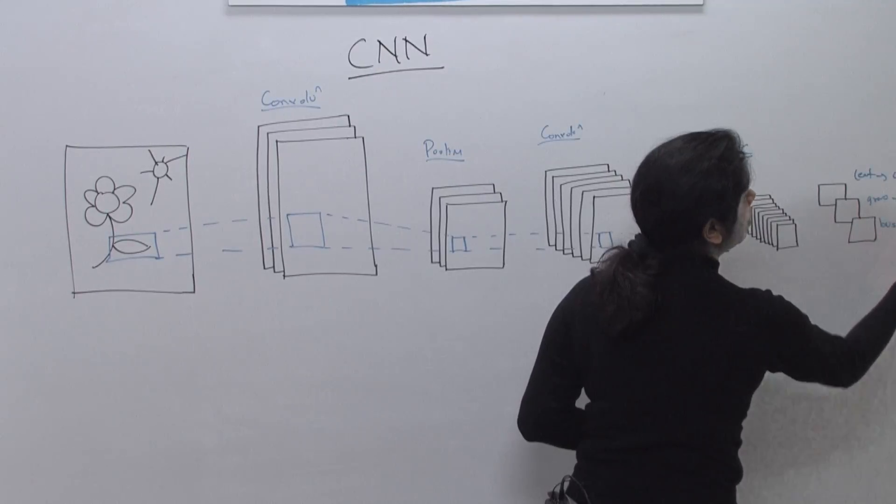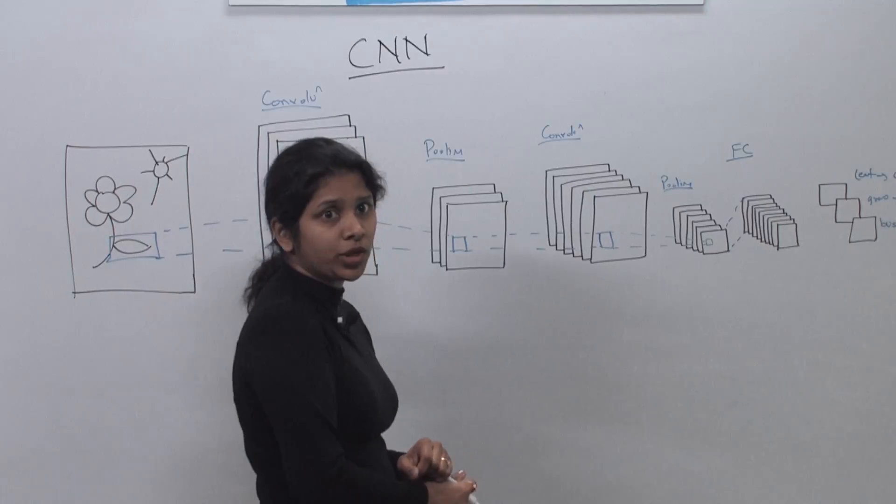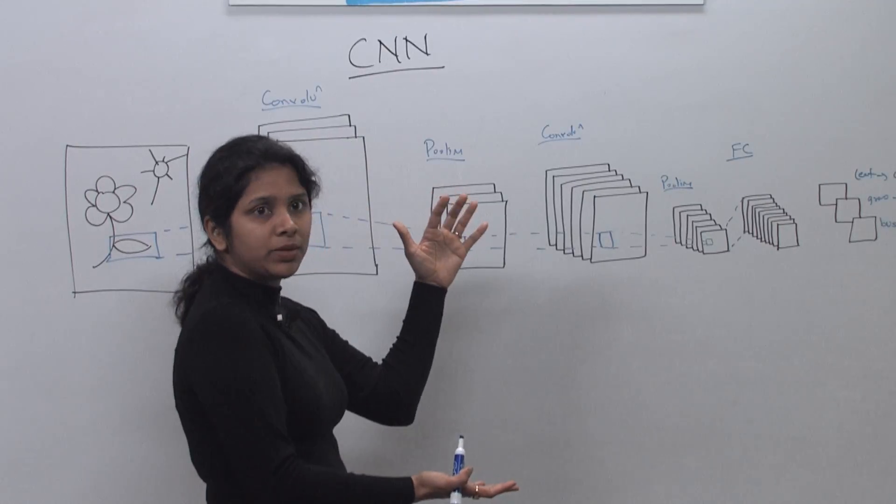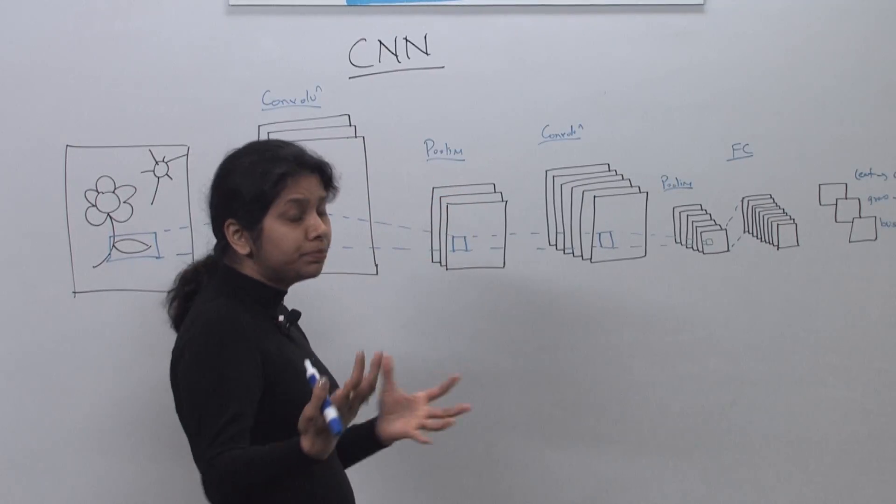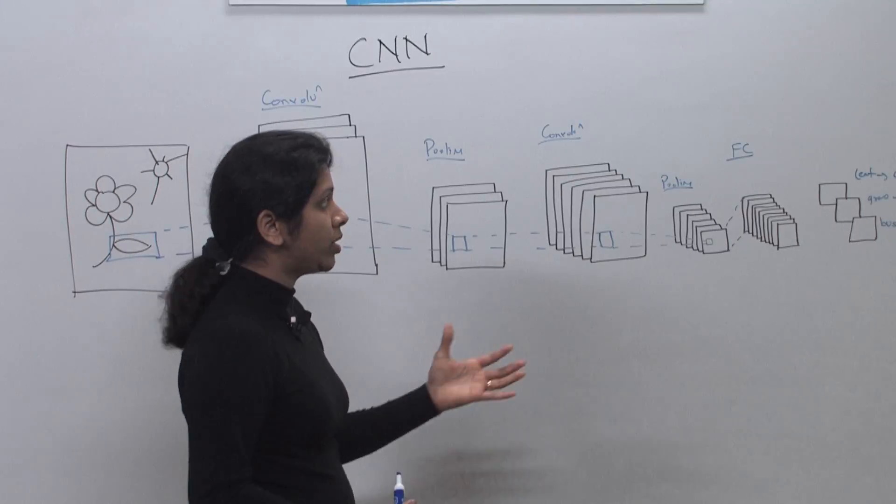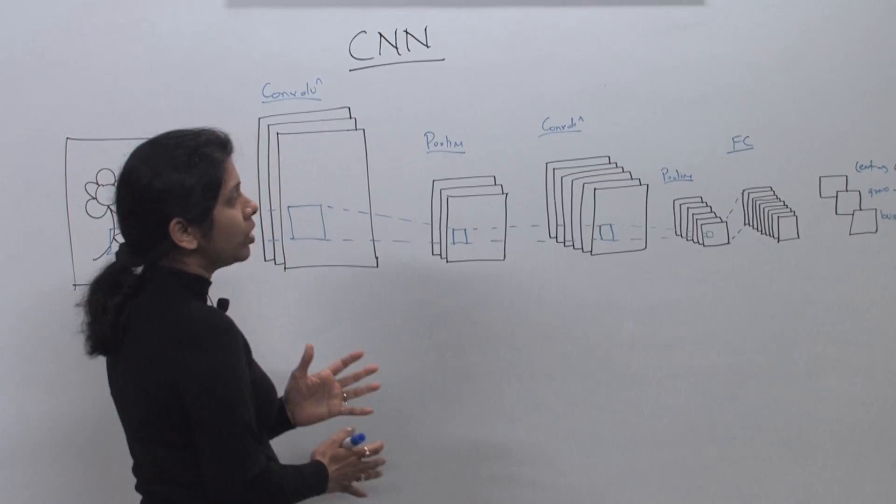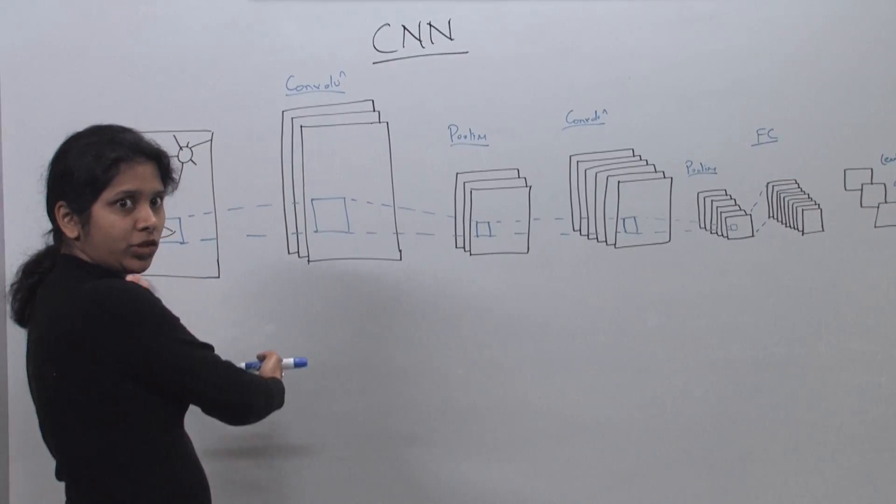And it gave a probability of 1% that it's a bush. So it gave you the top three probabilities, and we basically picked the top probability. It should be obviously in the higher ranges. And we say with confidence that this is a leaf which we picked.